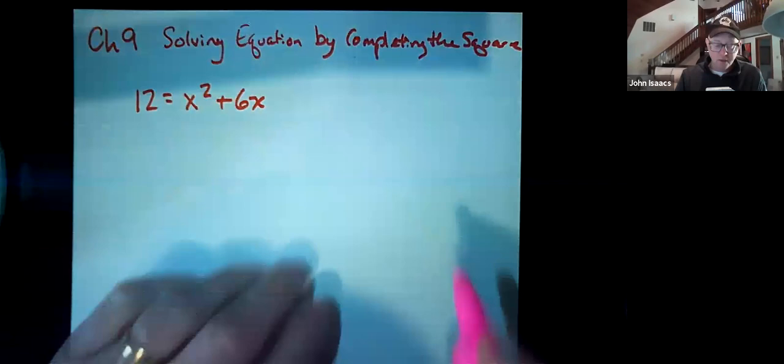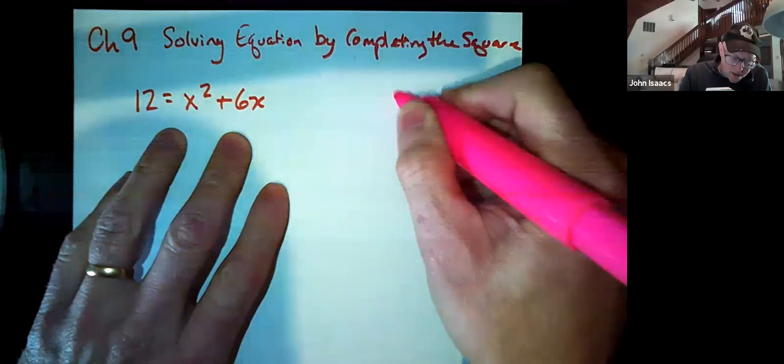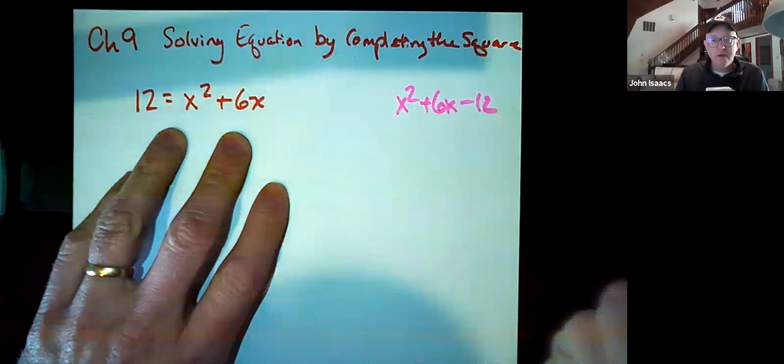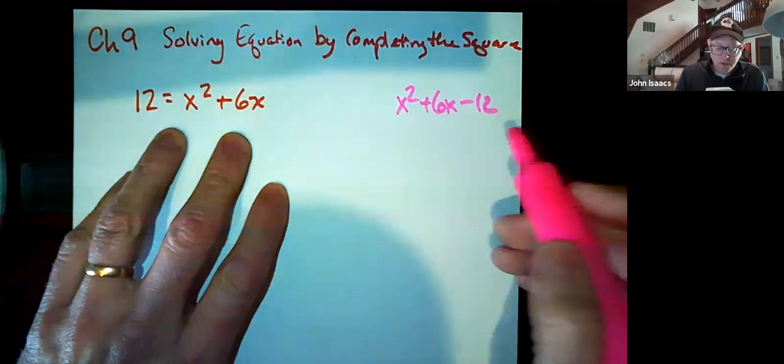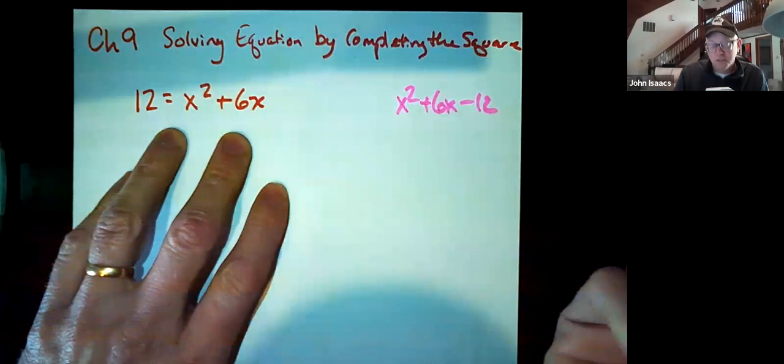So you might think, let's move the 12 over. Let's look at x squared plus 6x minus 12, see if we can factor that, which we cannot because with a negative 12, we need two things that have a difference of six that multiply to 12 and nothing does that.